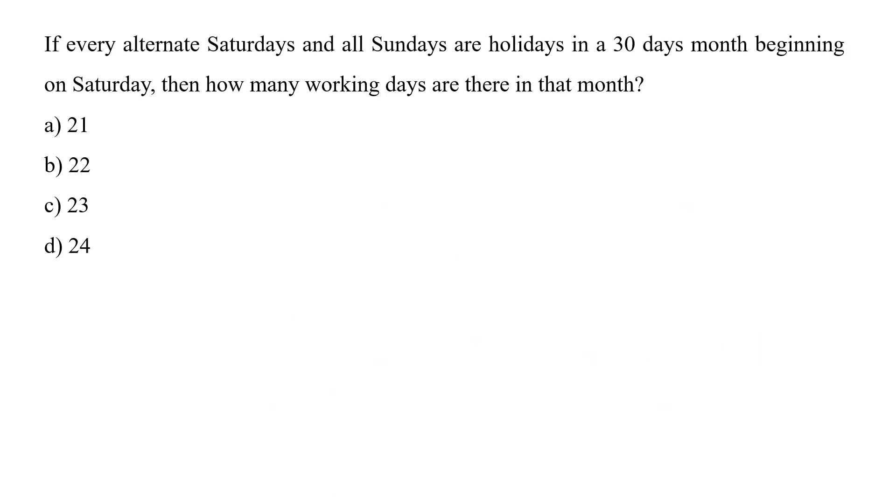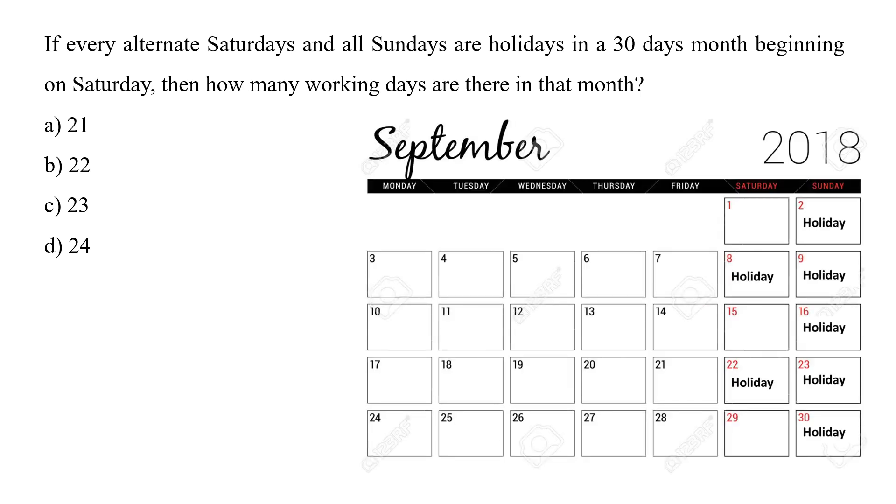If every alternate Saturday and all Sundays are holidays in a 30 days month beginning on Saturday, then how many working days are there in that month? Is it 21, 22, 23, or 24? If you see it in the figure, then there would be 5 Sundays would be there, that is on 2nd, 9th, 16th, 23rd, and 30th. While there would be 2 Saturdays which will be observed as a holiday, that is on 8th, that is 2nd Saturday, and 22nd. Rest 23 days would be the working day. So option C is the correct answer.